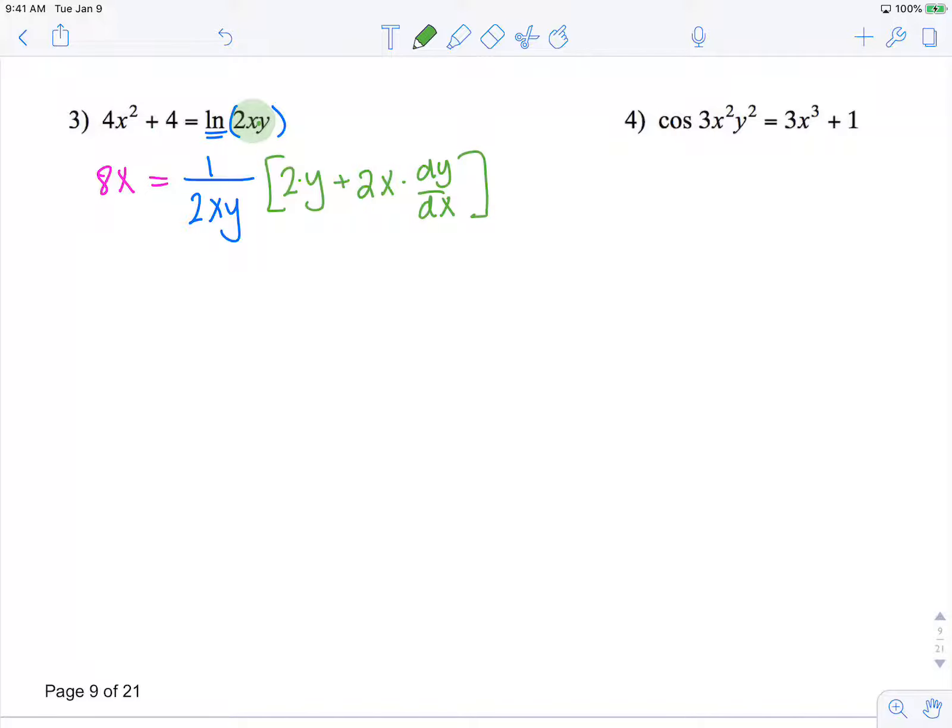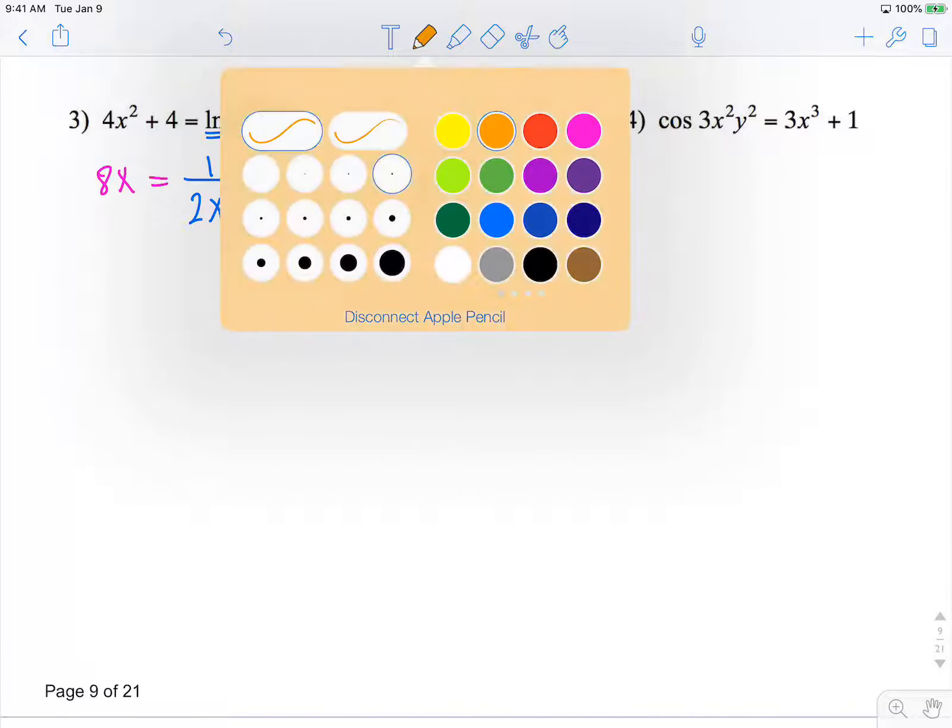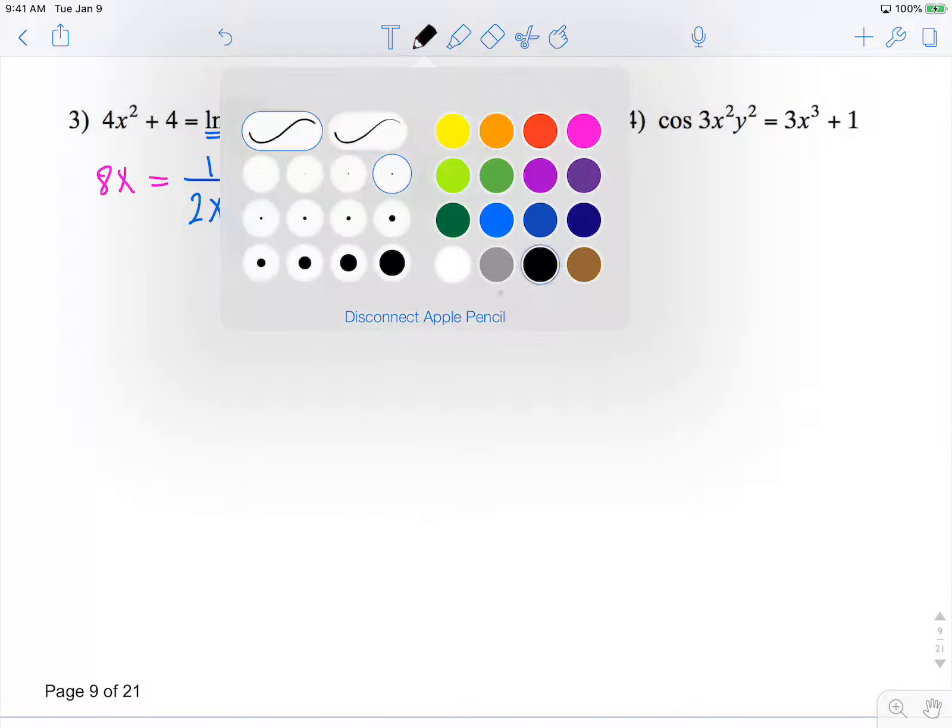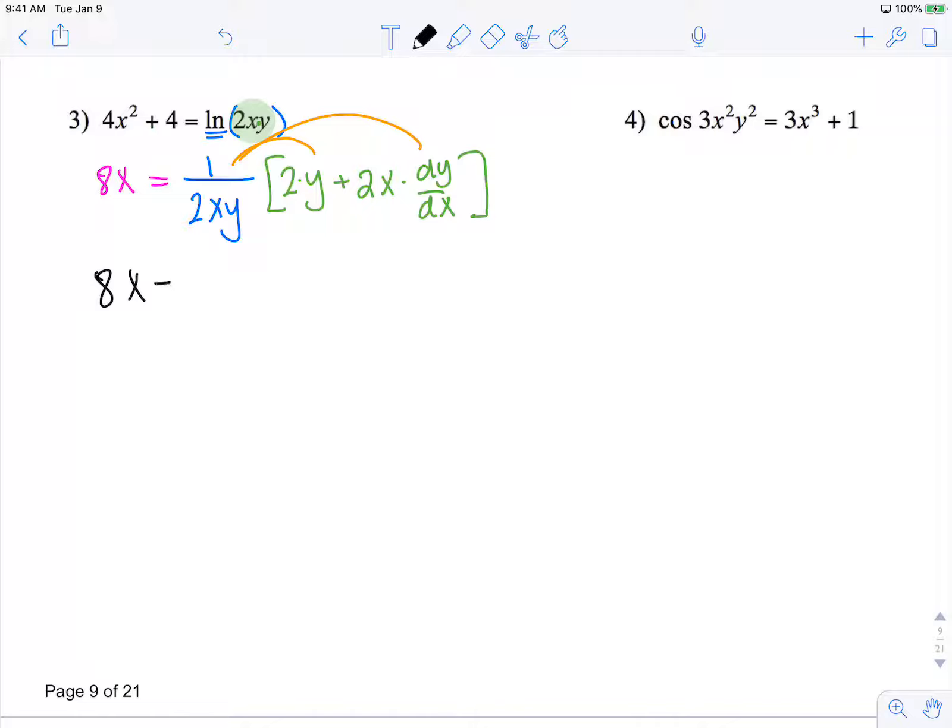So I need to create separate terms. I'm going to distribute this into these parentheses or brackets, so I have 8x equals